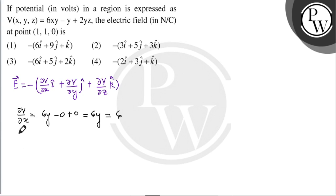Similarly, hum nikalenge del V upon del y, which is equal to 6x minus 1 plus 2z. Yahan se hum is expression ko differentiate kar rahe hain with respect to y only, to baaki variables ko hum constant maan kar chalte hain, aur y yahan par variable rahega.